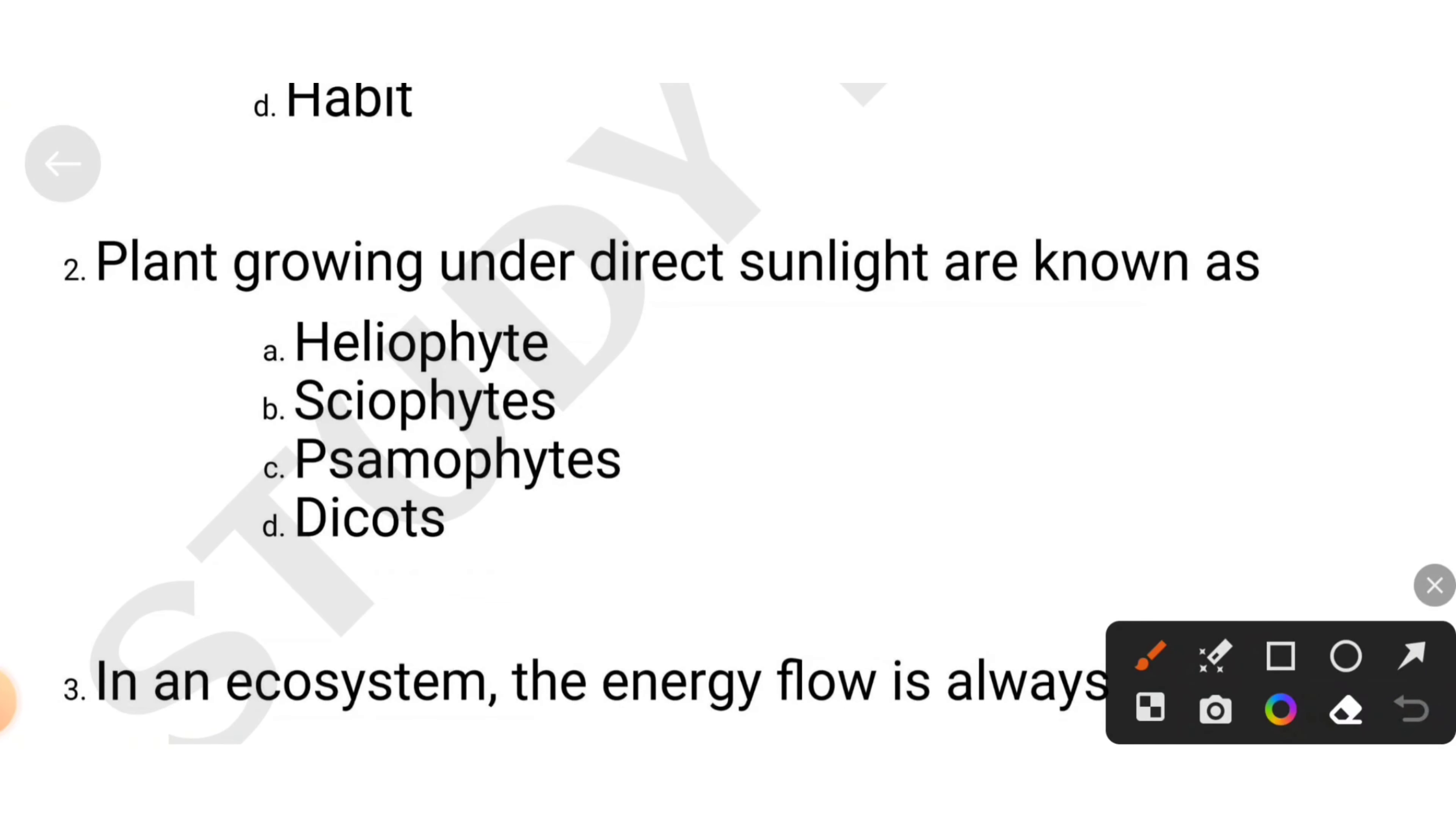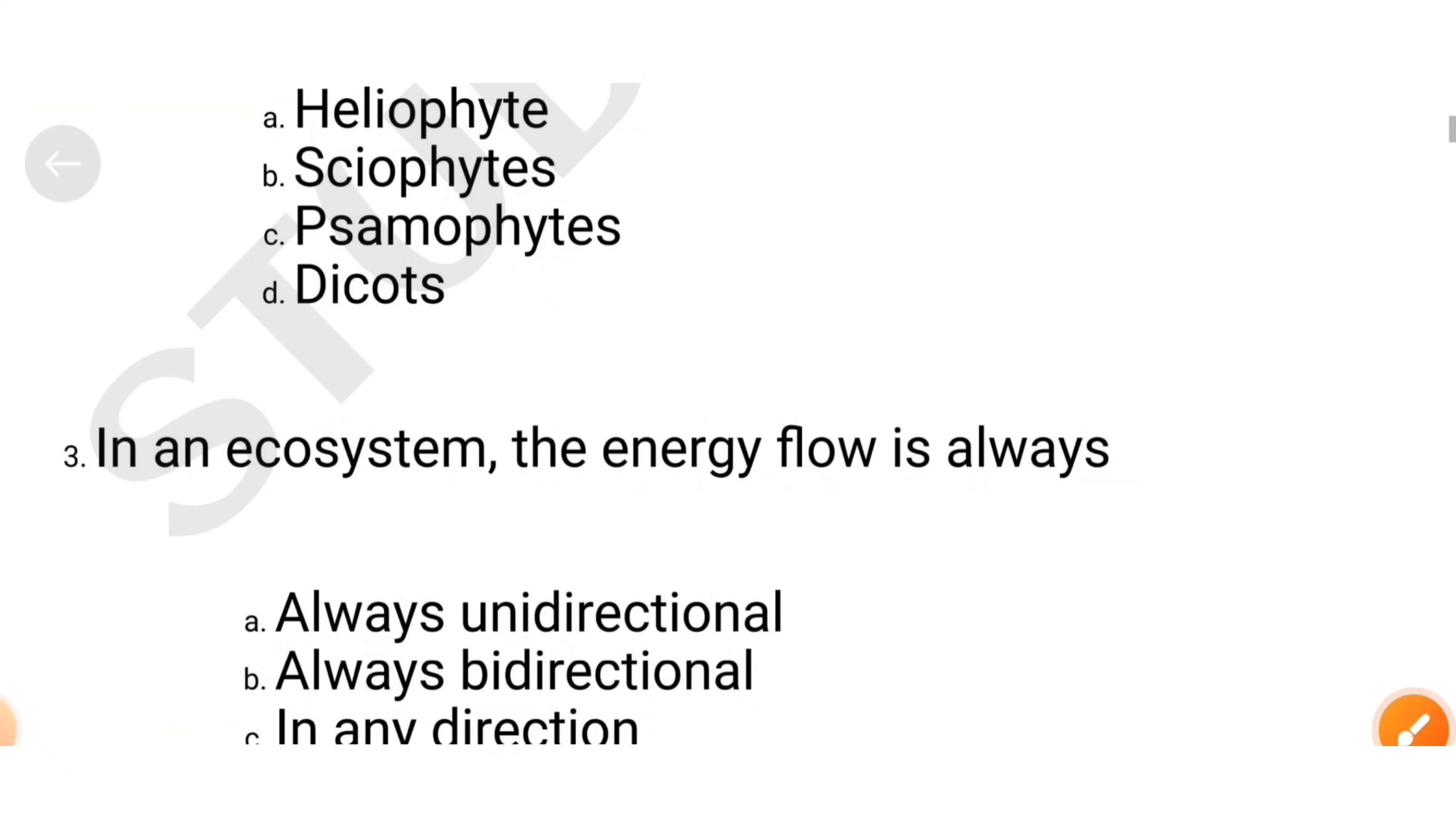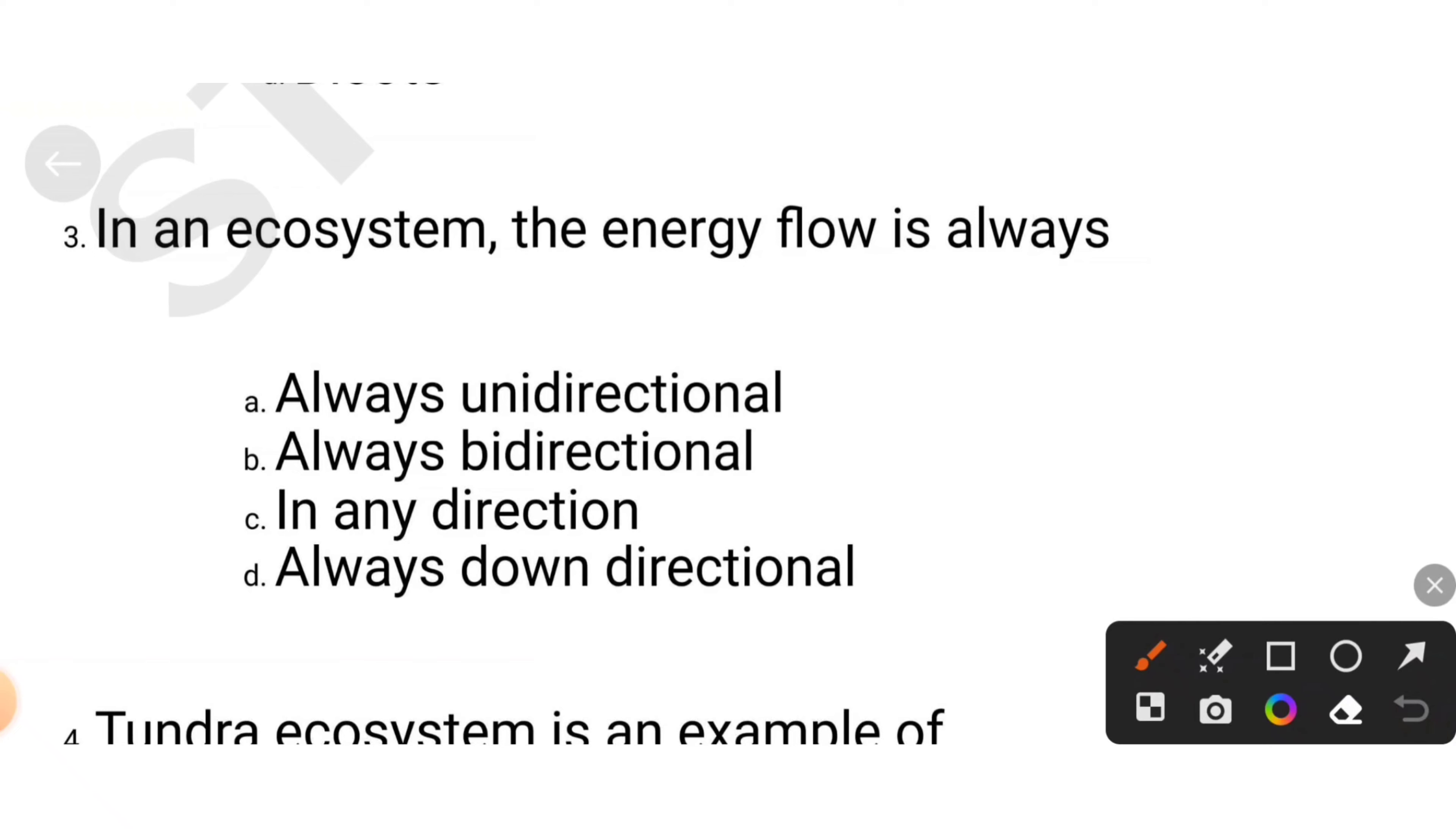Plants growing under direct sunlight, what do we call it? Heliophytes. That's what we call it. In an ecosystem, the energy flow is always unidirectional, bidirectional, in any direction or always down direction. So, the energy flow is always unidirectional.